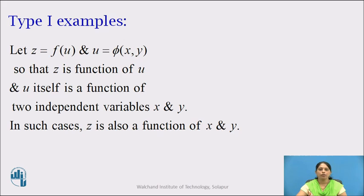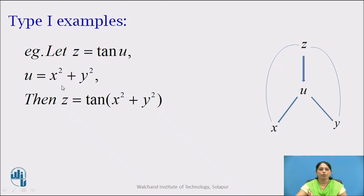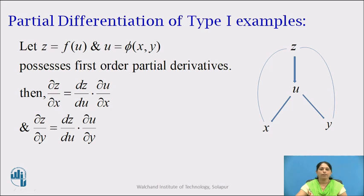Let z = f(u) and u = phi(x, y), so that z is a function of u and u itself is a function of two independent variables x and y. Here z is a function of single variable u and u is a function of two variables x and y. In such cases, z will be a function of x and y. For example, let z = tan(u) and u = x² + y². Then z = tan(x² + y²), where u is replaced by x² + y². So z is a function of two variables x and y.